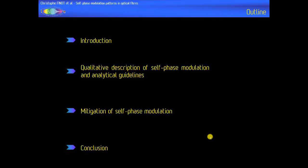This talk will be organized as follows. I will first recall and introduce what is self-phase modulation, then explain how it is possible to qualitatively understand the physical origin of this process and to show that it is possible to obtain some analytical guidelines that can predict the features of self-phase modulation. In the second part I will show a simple experiment where we mitigate the effect of self-phase modulation.